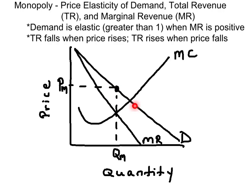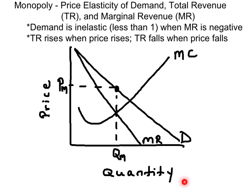That is, consumers are responding to changes in the price. When marginal revenue becomes negative, the corresponding price elasticity of demand is inelastic. So as the price rises along this region of the demand curve, total revenue will rise. And when the price comes down along this region of the demand curve, total revenue will fall. Consumers are not very responsive to changes in price. So as long as marginal revenue is negative, the corresponding demand will be inelastic.